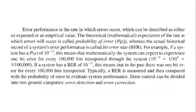Error performance is the rate at which errors occur, which can be described as either an expected or empirical value. The theoretical expectation of the rate at which errors will occur is called probability of error, whereas the actual historical record of the system's error performance is called bit error rate (BER).